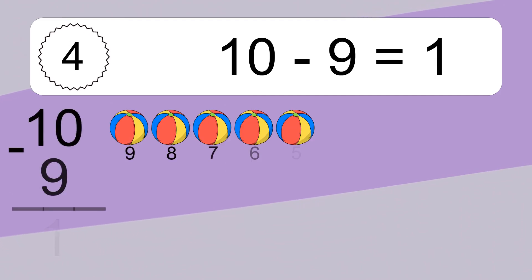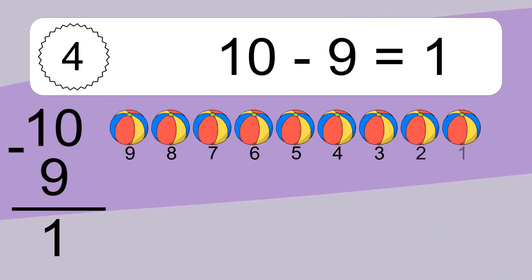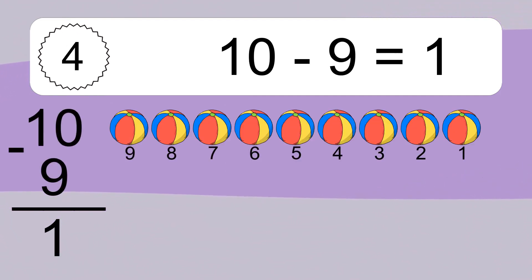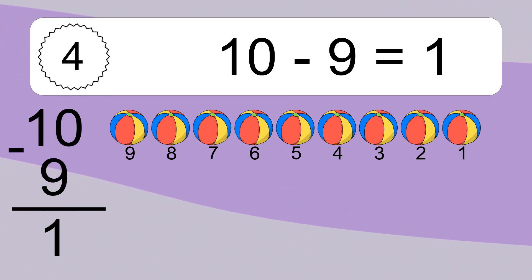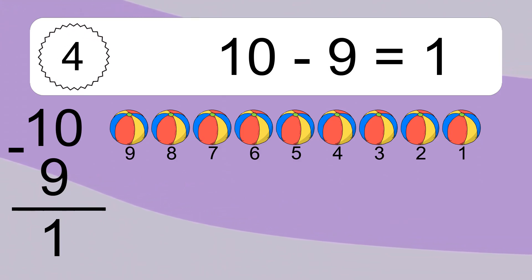10 minus 9 equals what? 10 minus 9 equals 1. Let's count it: 9, 8, 7, 6, 5, 4, 3, 2, 1.